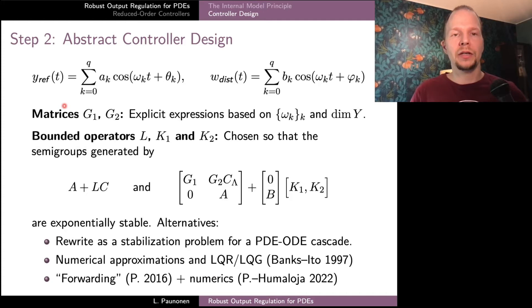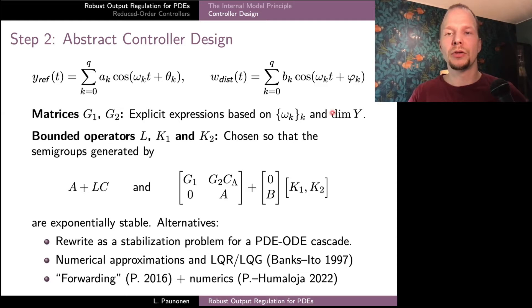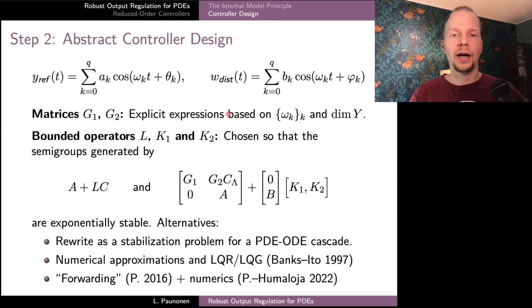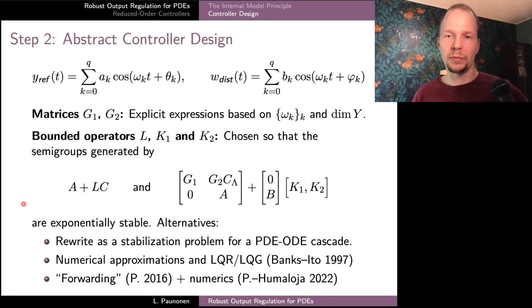What remains in the controller design is to find values for these open parameters. For the reference and disturbance signals with known frequencies and unknown amplitudes and phases, the matrices G1 and G2 can actually be constructed explicitly just based on the frequencies in the signals and the number of independent outputs — which in our case equals one. These matrices G1 and G2 contain the internal model of our controller. The rest of the parameters are then chosen so that the closed-loop system will be stable.